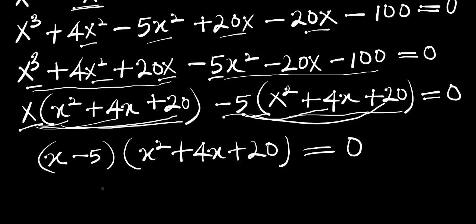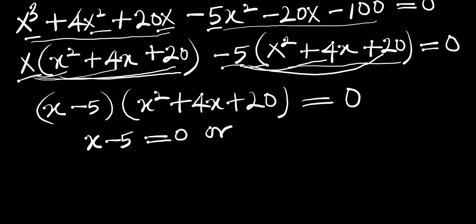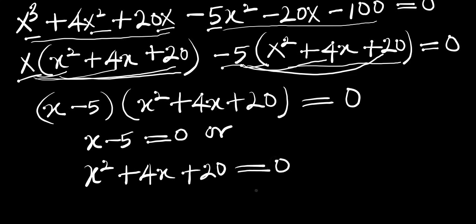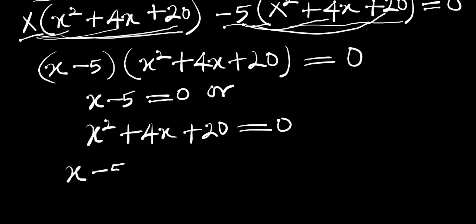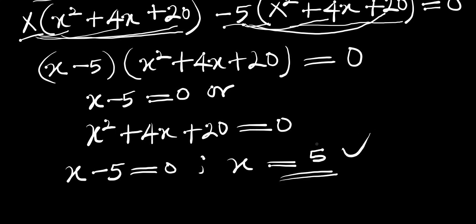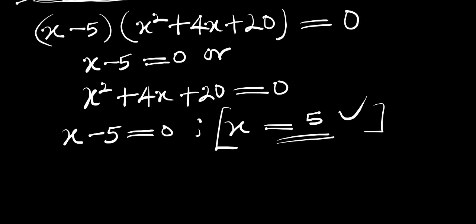In order to solve for x we have two different equations: x minus 5 equals 0, or x² plus 4x plus 20 equals 0. For the first equation, x minus 5 equals 0 means x equals 5. This is a real solution — one of the solutions for the equation.